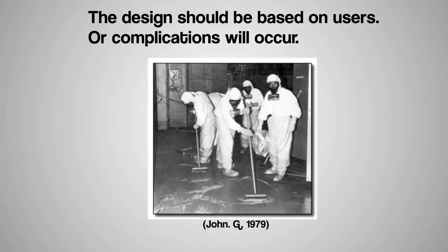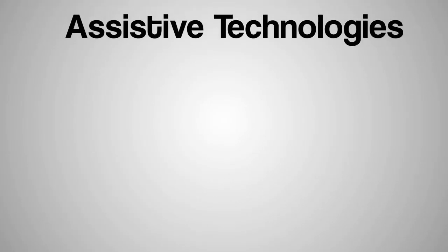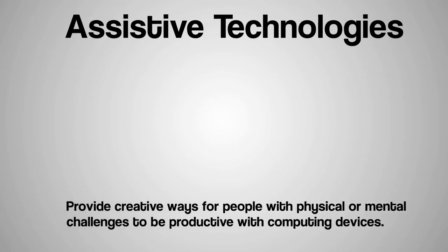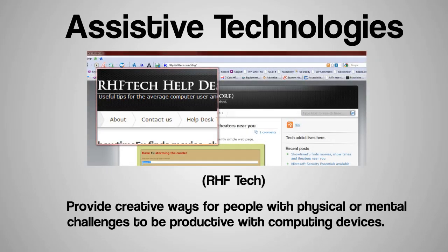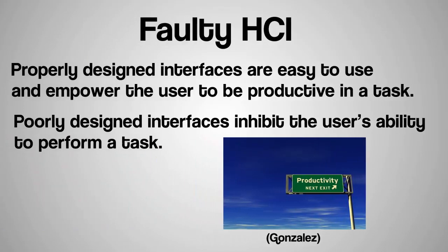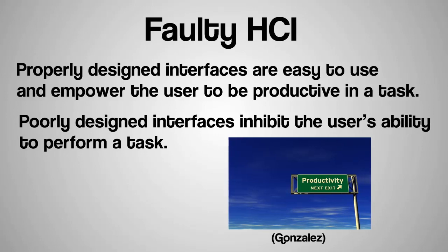The design should really be based on users and the interaction between computers and humans. The subfield of assistive technologies is rapidly growing, providing more creative ways for people with physical or mental challenges to interact and be productive when using their computing devices. Ranging from the Windows Magnifier to more advanced text-to-voice and voice-to-text applications, these innovations make everyday life easier. A properly designed user interface can be both easy to use and still provide the necessary power to help the user be productive, while a poorly designed interface can inhibit the user's ability to perform tasks — whether a minor problem or a devastating one such as the Three Mile Island incident.